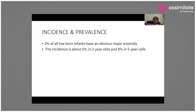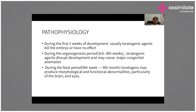Regarding incidence and prevalence: 3% of all live-born infants have an obvious major anomaly. In utero, about 90% of cases are diagnosed and those pregnancies are often terminated; 10% continue to delivery. The incidence rises to about 6% in two-year-olds and 8% in five-year-olds, because many anomalies are not diagnosed at birth due to limited health outreach and lack of parental awareness.